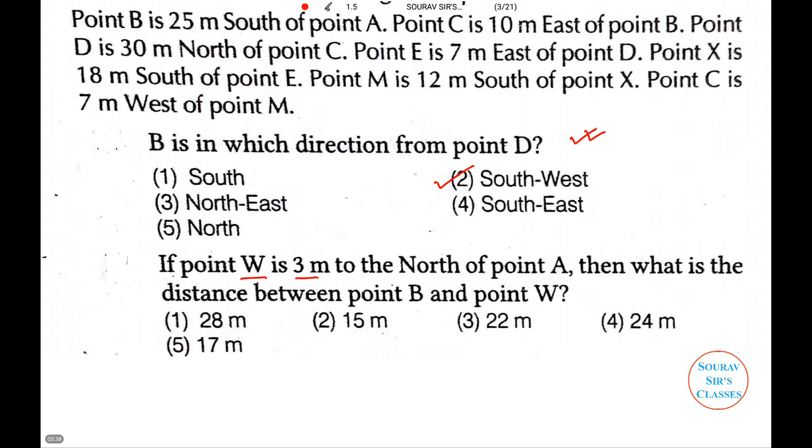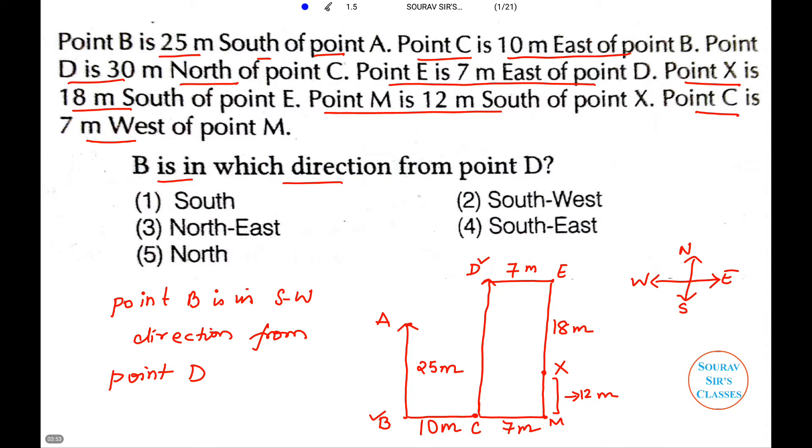Now, the question is: if point W is 3 meters to the north of point A, then what is the distance between point B and point W? So, point W is 3 meters to the north of point A.